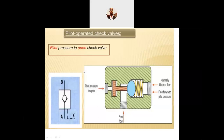Now this is the pilot-operated check valve. Pilot pressure is used to open the valve. A pilot means there is a bypass control — the pilot pressure is applied to open the valve and allow free flow. By manually operating the pilot, you can displace the puppet from its normal seating position, making the valve orifice open. In the normal blocked-flow position the valve is closed; with pilot pressure applied, you can move it to the open position for free flow.